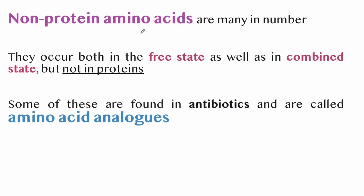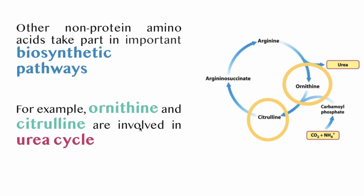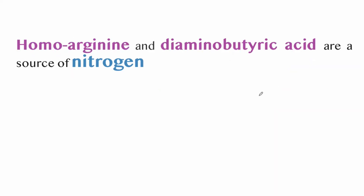Non-protein amino acids are many in number; they occur in both free state and combined form but not in proteins. Some are found in antibiotics and are known as amino acid analogues. Other non-protein amino acids take part in biosynthetic pathways — for example, ornithine and citrulline are involved in the urea cycle. Homo-arginine and diaminobutyric acids serve as sources of nitrogen.